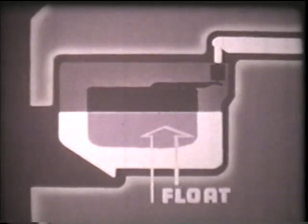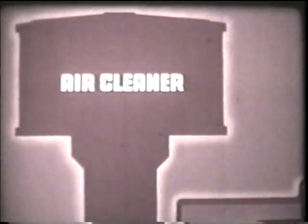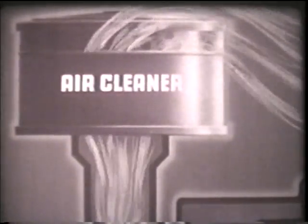Fuel enters the carburetor at the float chamber, which is sort of a storeroom with a float to keep the fuel at the proper level. Air is sucked in through an air cleaner. The racing pistons pull it at the speed of a full gale past a tiny opening called a fuel jet, which is the right size to mix the proper proportions of fuel to air—one part of fuel to about 15 parts of air by weight.